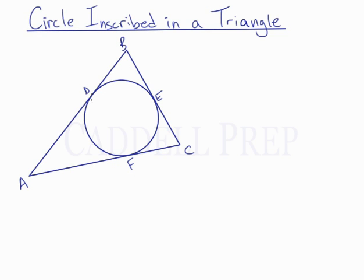First of all, these tangent points are not midpoints of the sides of this triangle. AD is not the same length as DB. But something does happen where line segments are equal.